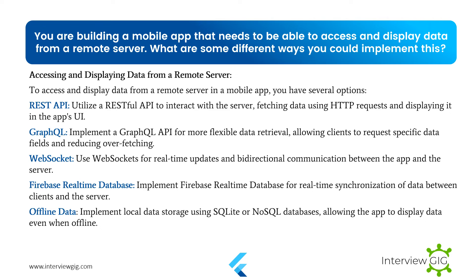You are building a mobile app that needs to access and display data from a remote server. What are some different ways you could implement this? Options include: REST API — fetch data using HTTP requests and display it in the UI. GraphQL — allow clients to request specific data fields, reducing overfetching. WebSockets — enable real-time updates and bidirectional communication. Firebase Realtime Database — real-time data synchronization between clients and the server. Offline data — implement local storage using SQLite or NoSQL databases, allowing the app to display data even when offline.